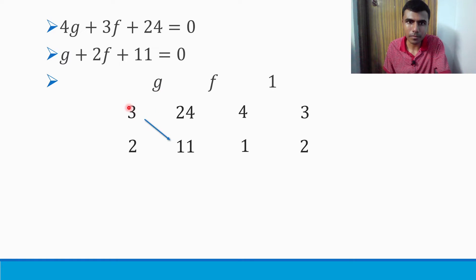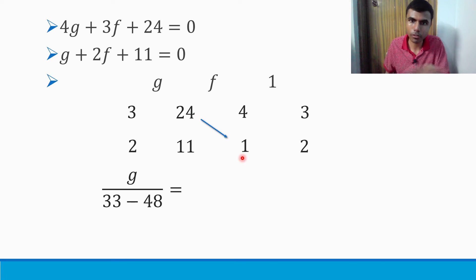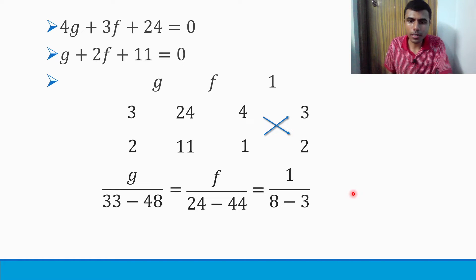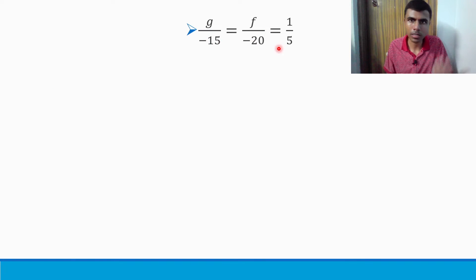So g by (3×11 - 2×24) equals f by (24×1 - 11×4) equals 1 by (4×2 - 1×3). This gives g by (33 - 48) equals f by (24 - 44) equals 1 by (8 - 3).